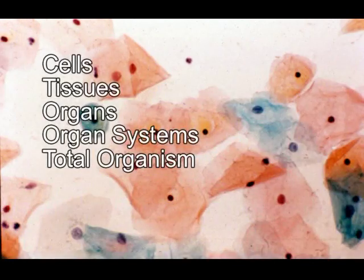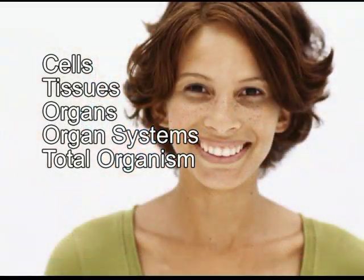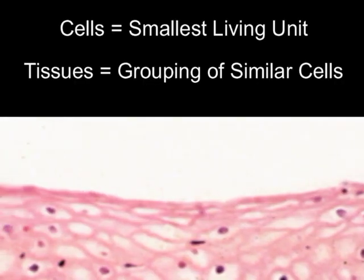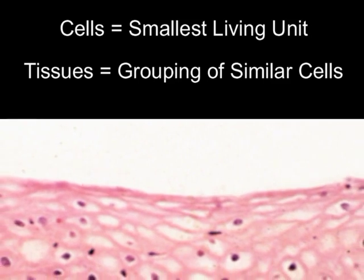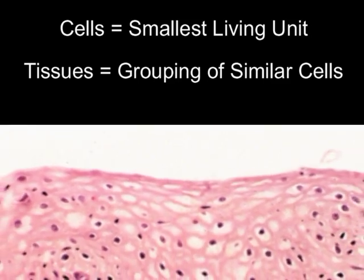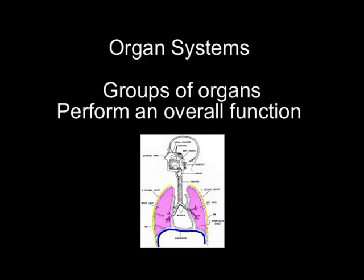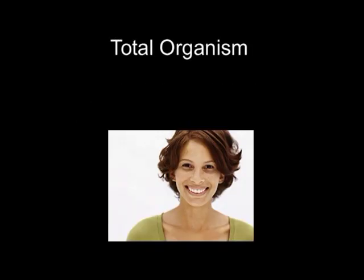The human body is organized into cells, tissues, organs, organ systems, and the total organism. Cells are the smallest living unit of body construction. A tissue is a grouping of similar cells working together — examples include muscle tissue and nervous tissue. An organ is a structure composed of several different tissues performing a particular function — examples include the lungs and the heart. Organ systems are groups of organs which together perform an overall function, such as the respiratory and digestive systems. The total organism is the individual human being.